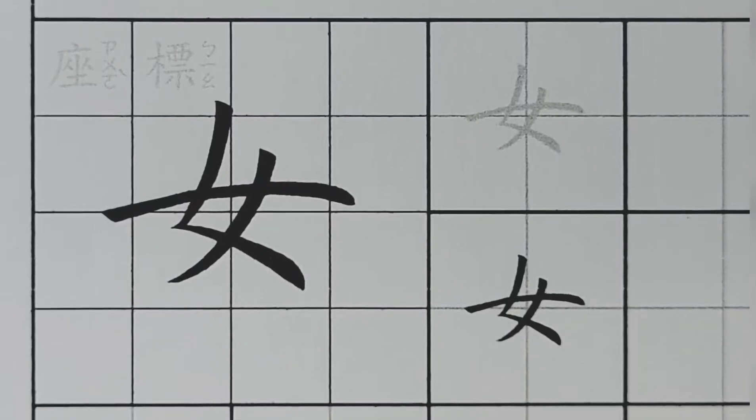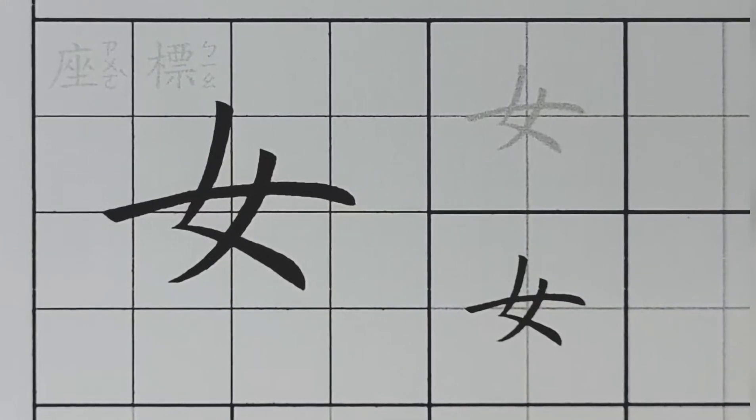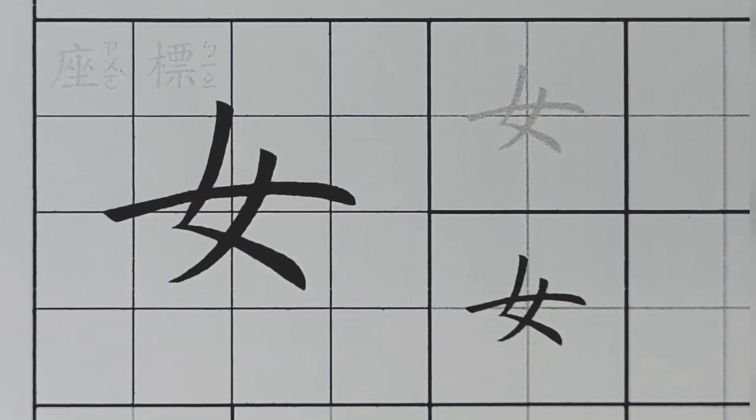第十八章,注意第一個部分是寫坐標位置的。如果你看到這個影片,首先要注意坐標的寫法。